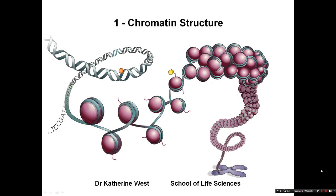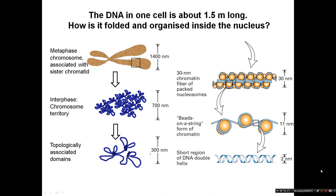In this first short lecture I'm going to talk about nucleosome structure and chromatin folding. The DNA in any one cell is about one and a half meters long. So how is it folded and organized inside the nucleus so that it's an organized structure and not just a big tangled mess of DNA?